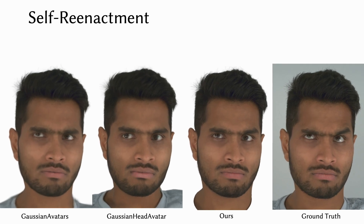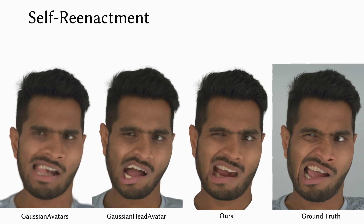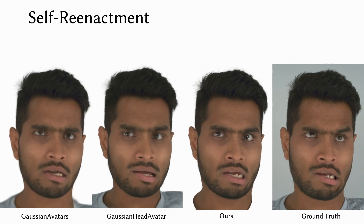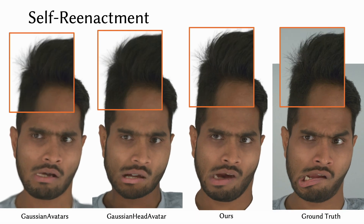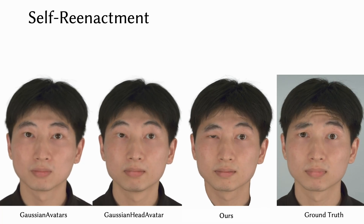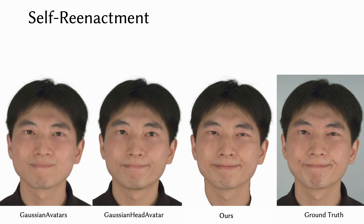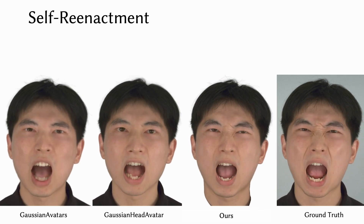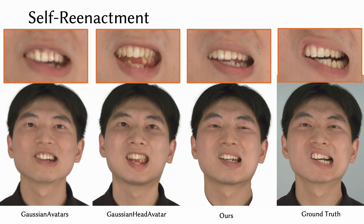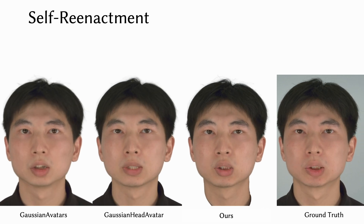All methods are trained on 15 views, using all sequences except for the held-out test sequence, shown here. While all methods demonstrate impressive performance, Gaussian Avatars tend to produce blurrier results due to a lack of dynamic expressivity.